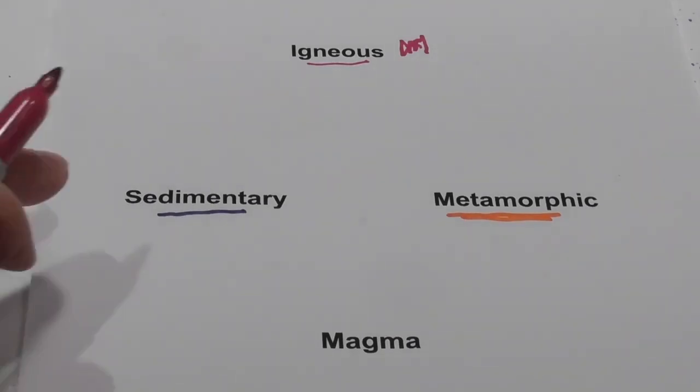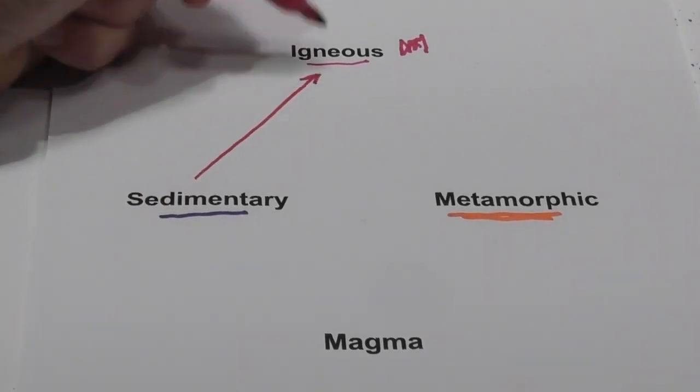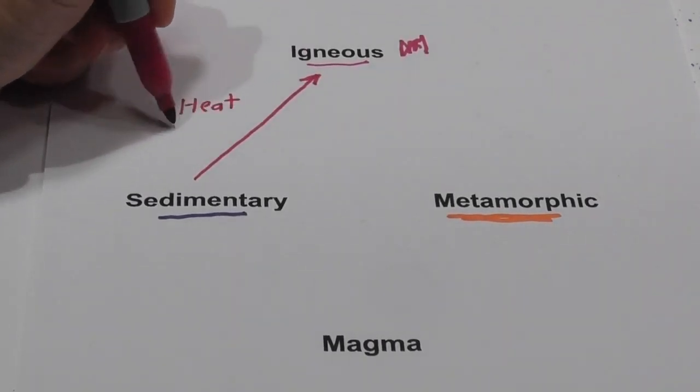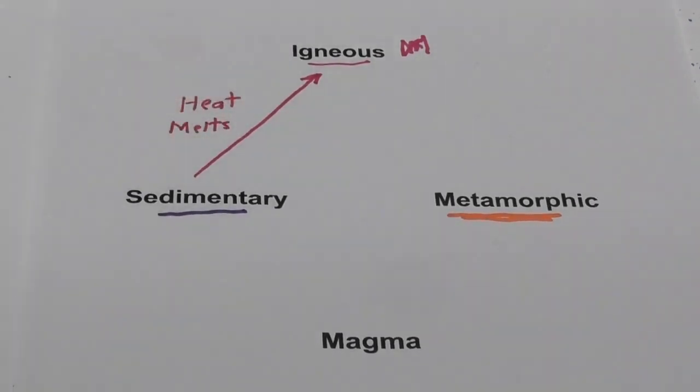How does a sedimentary rock become an igneous rock? And I'm going to use this color on purpose because it requires heat and it actually melts. Now, the igneous rock can be intrusive or extrusive. If it melts, if it cools on the surface, it's extrusive. If it cools inside the earth, it is intrusive.